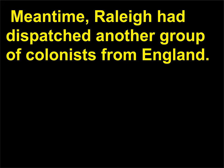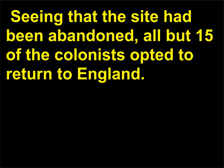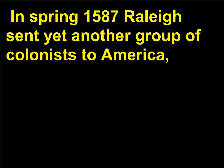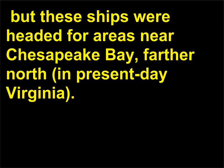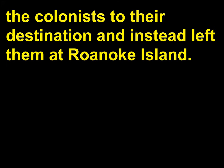Meantime, Raleigh had dispatched another group of colonists from England. They arrived at Roanoke days after the original settlers left. Seeing that the site had been abandoned, all but 15 of the colonists opted to return to England. In spring 1587 Raleigh sent yet another group of colonists to America, but these ships were headed for areas near Chesapeake Bay, farther north, in present-day Virginia. Reaching the outer banks in July, the ship's commander refused to take the colonists to their destination and instead left them at Roanoke Island.